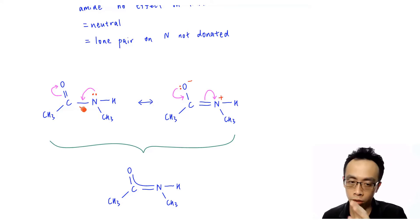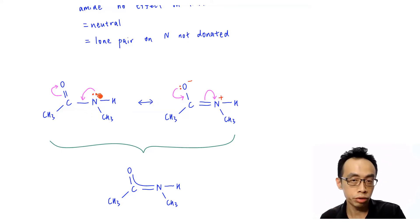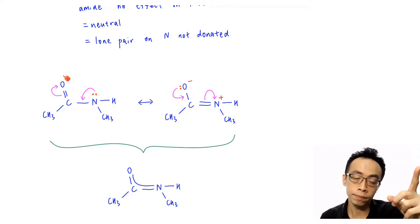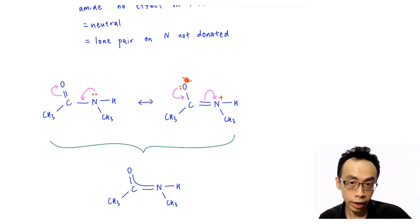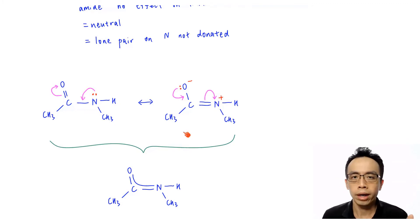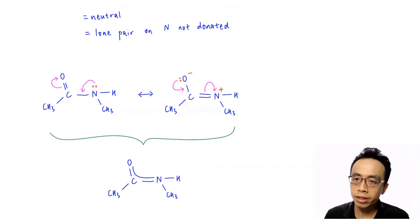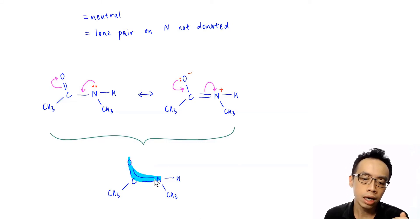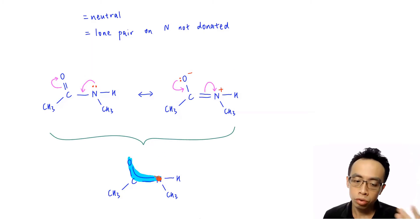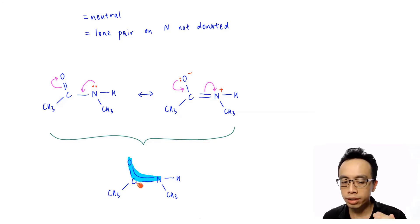On the left-hand structure, the lone pair is on nitrogen, but it doesn't stay there — it can be delocalized and go to oxygen. On the right-hand structure, the lone pair is on oxygen, but it can come back to nitrogen. So where exactly is the lone pair in the amide? It is not on nitrogen. It is not on oxygen. It is delocalized somewhere in between — spread out very extensively between oxygen, carbon, and nitrogen.